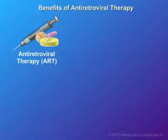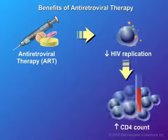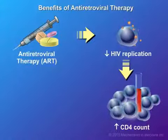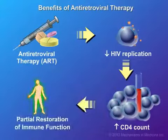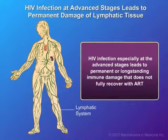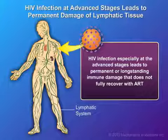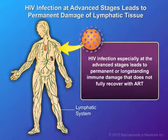Treatment with antiretroviral therapy, or ART, can slow down the replication of HIV and partially restore healthier levels of CD4 cells and subsequently immune function in the body. However, HIV infection, especially at the advanced stages, leads to permanent or long-standing immune damage that does not fully recover with ART.